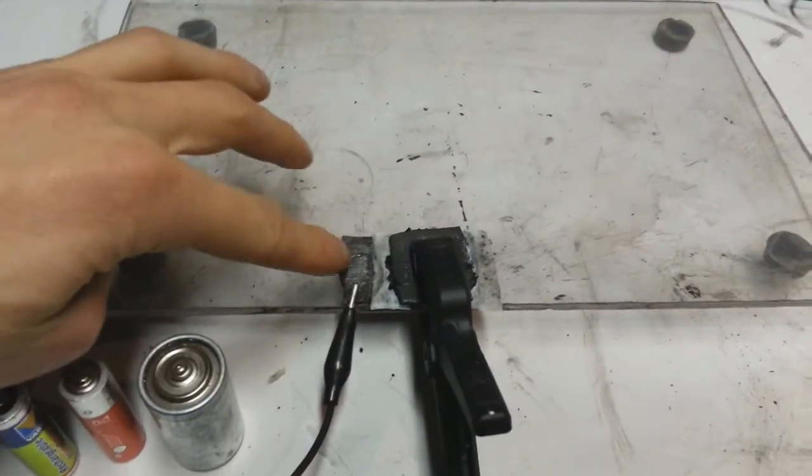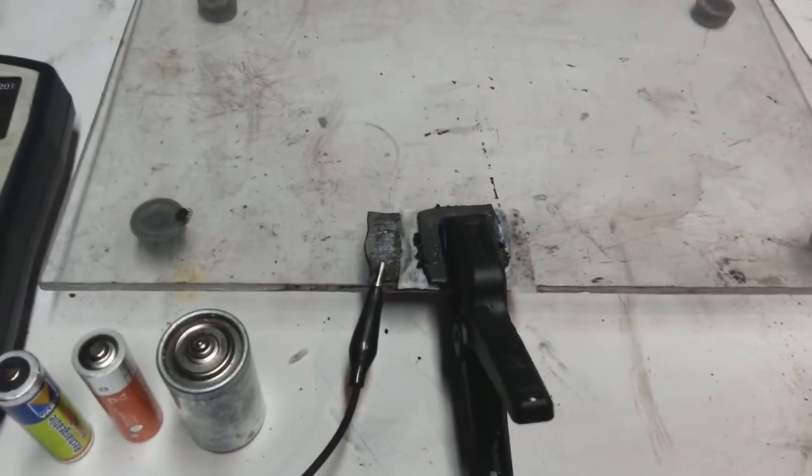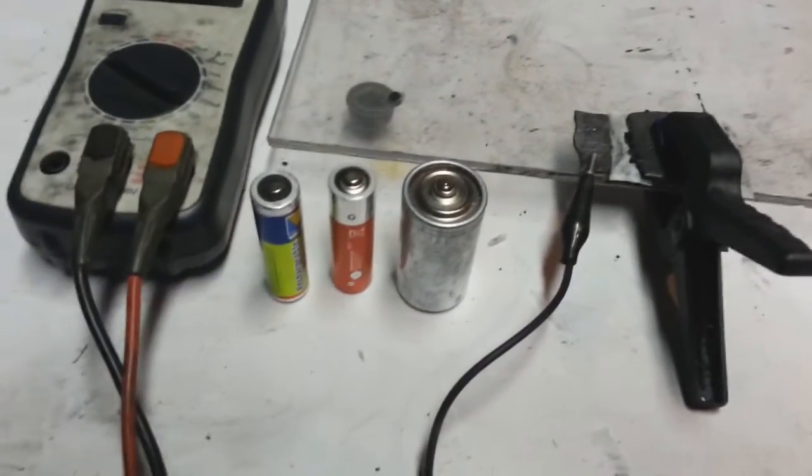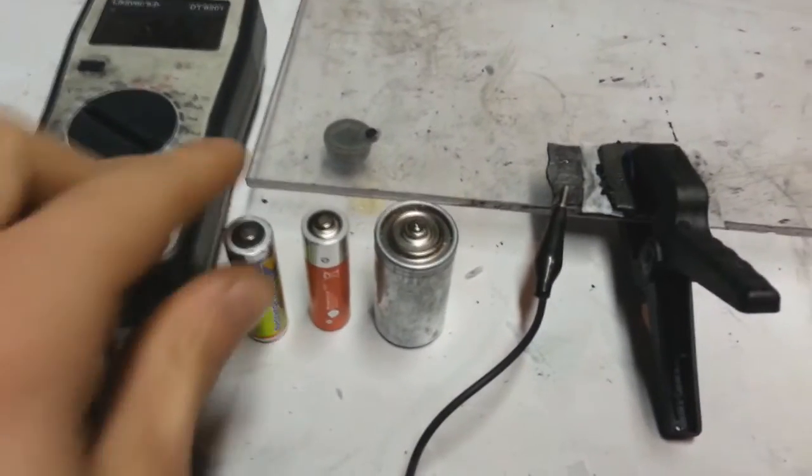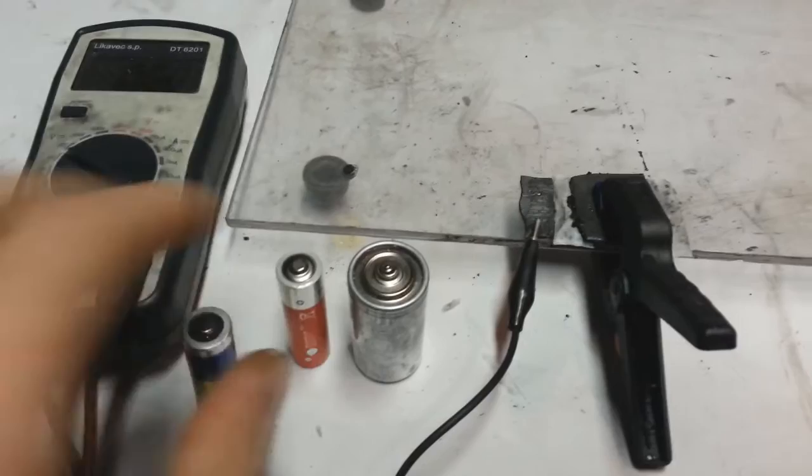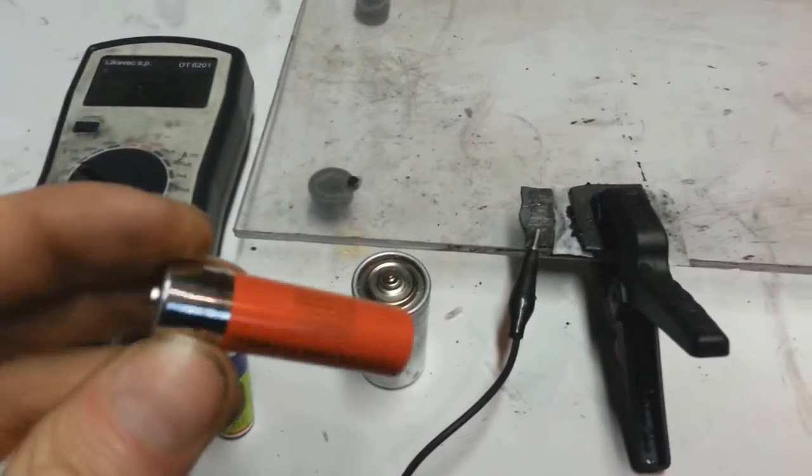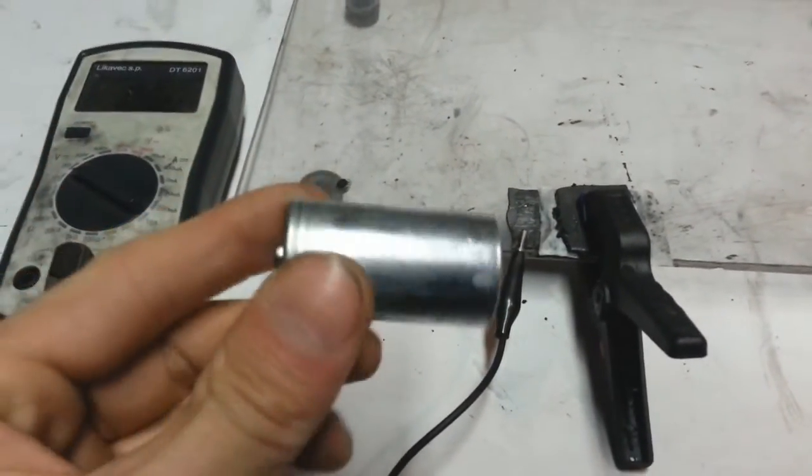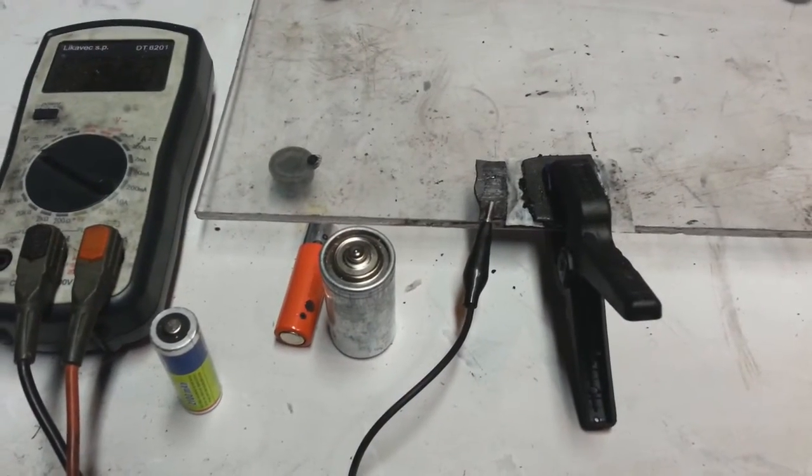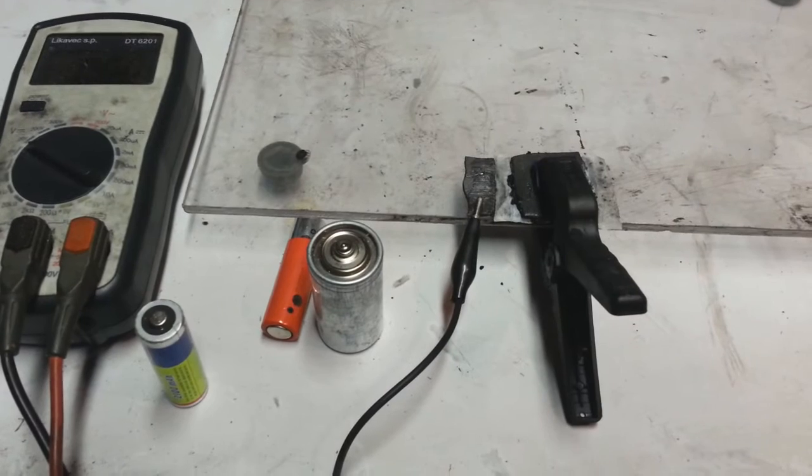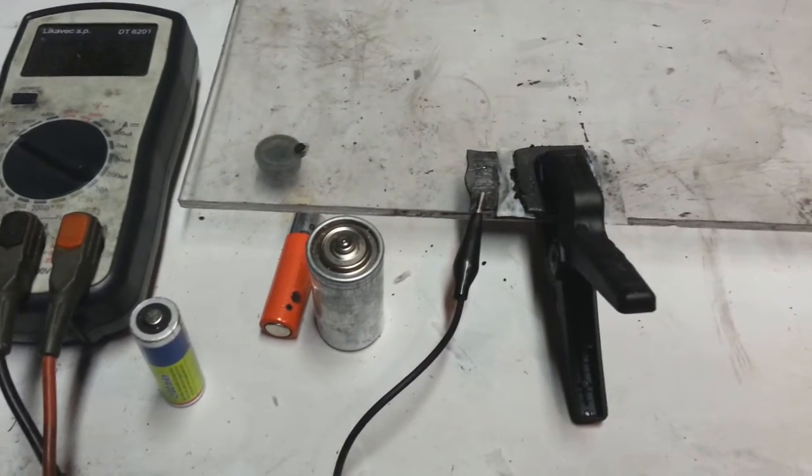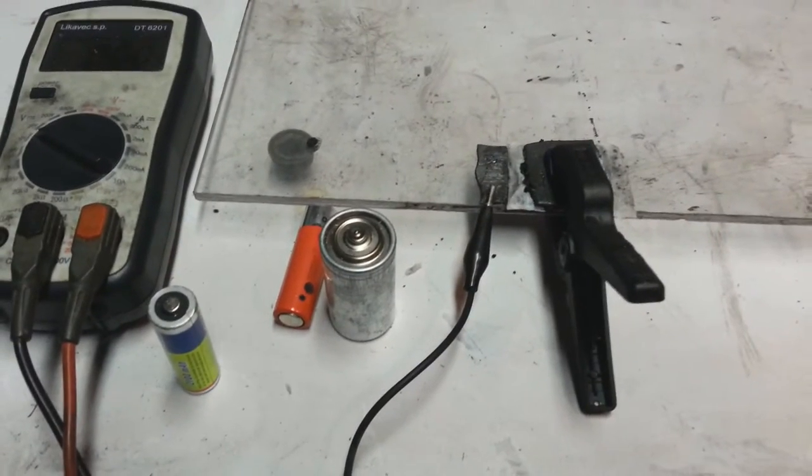Here I have my test cell of dual carbon battery and here I have some other types of battery like nickel metal hydride battery, alkaline battery and carbon zinc battery. I will short out all these batteries and I will show you the voltage drop of each battery.